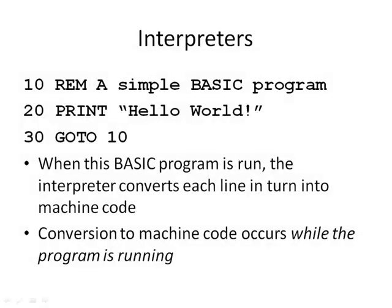So what does an interpreter do? Here's a simple BASIC program. The first line is a comment — it doesn't actually do anything, just a note for the human reader. The second line prints a message, and the third line says go back to line 10, jumping back to the beginning. So that program will keep running. When this BASIC program is run, the interpreter converts each line in turn into machine code as it is running — the conversion to machine code occurs while the program is running.